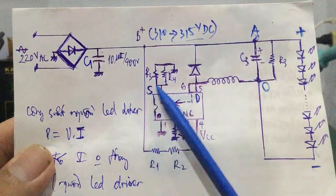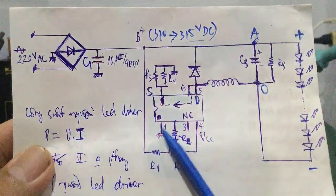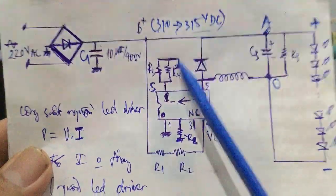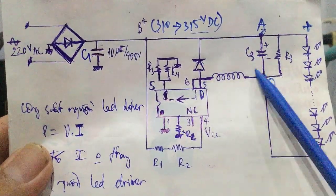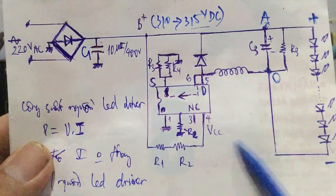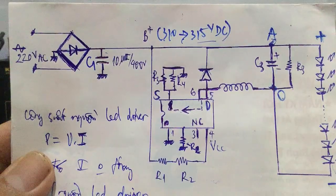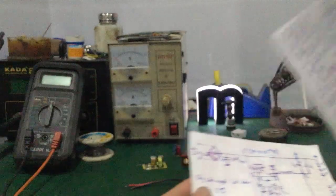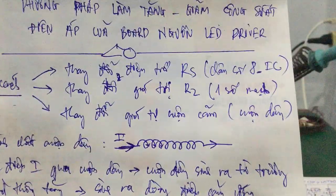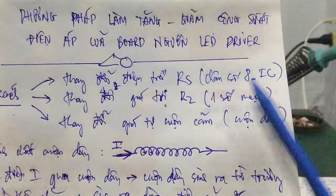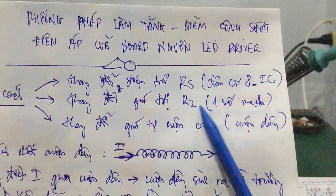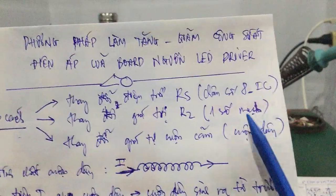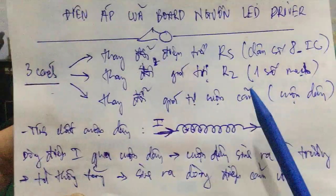Đó là các bạn giữ nguyên R1, R2 - hoặc là giữ nguyên giá trị điện trở mắc từ chân số 2 xuống mát - mà thay đổi cuộn dây và cuộn cảm nằm trong bộ nguồn LED driver này. Đây là cách thứ 3. Mình sẽ thay đổi giá trị cuộn cảm hoặc cuộn dây nằm trong bộ nguồn LED driver.